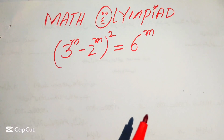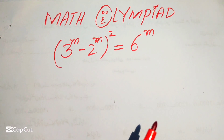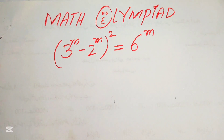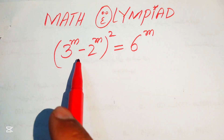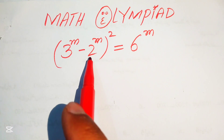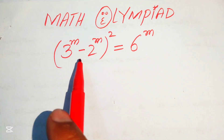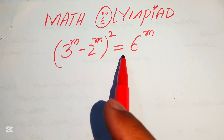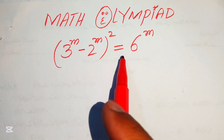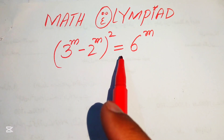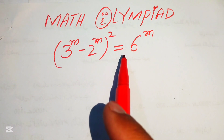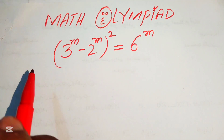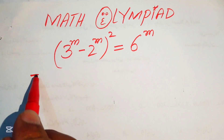Hello everyone, welcome. We will solve this exponential equation: (3^m - 2^m)² = 6^m, and find the values of m. First, we use the algebraic formula for (a - b)².